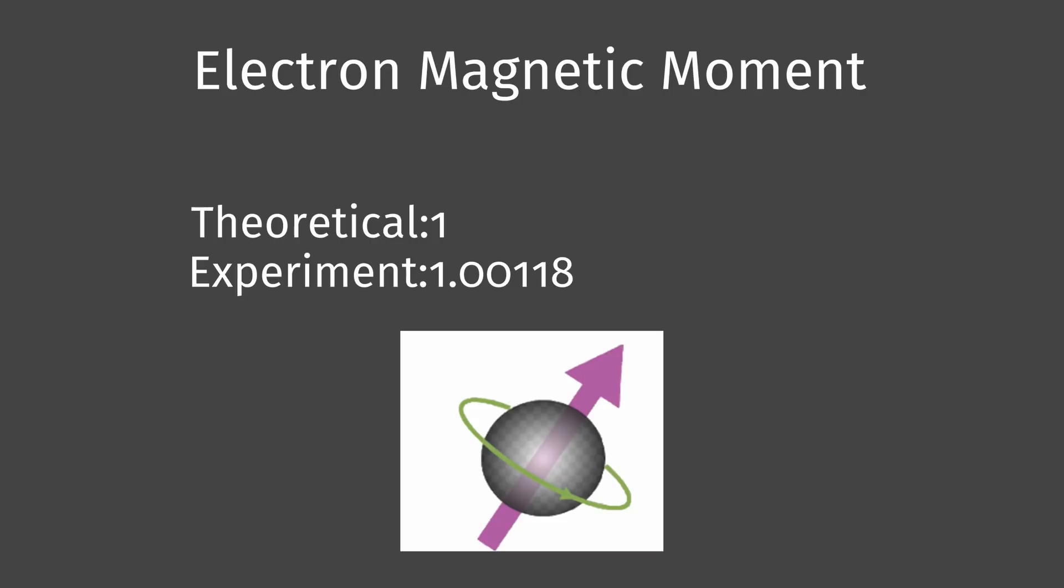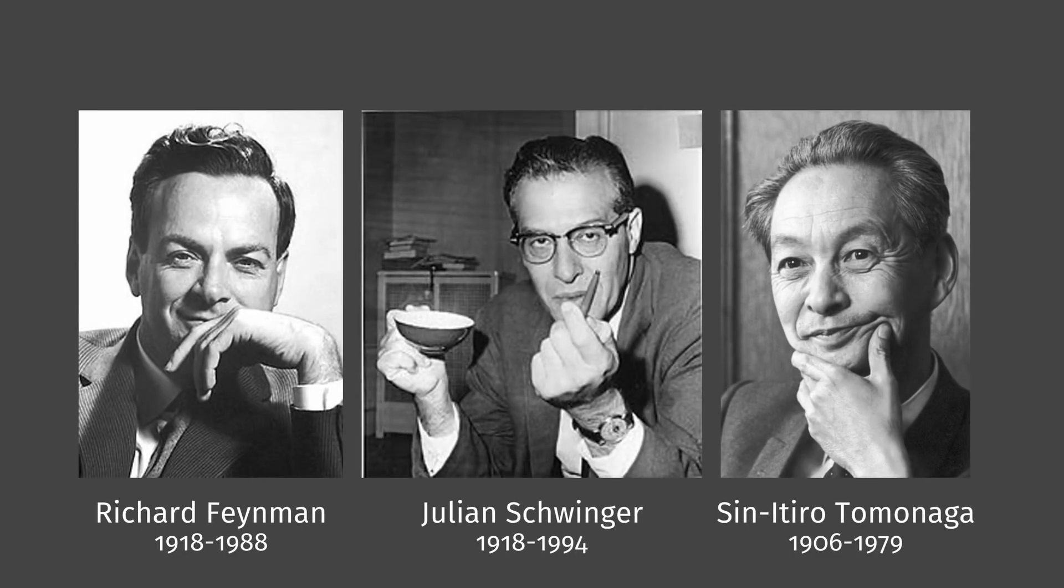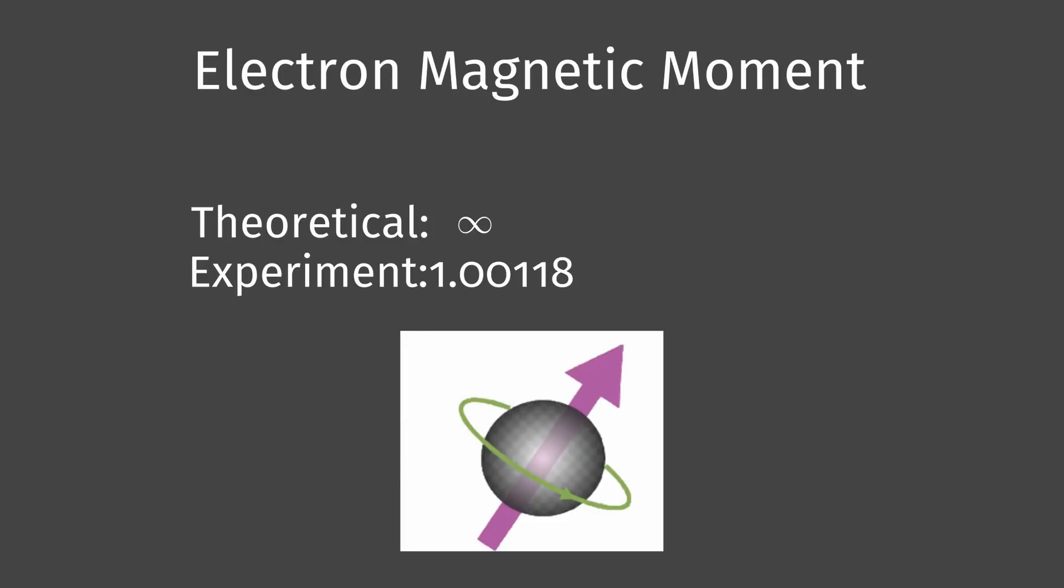Yet as we go and calculate, we get infinity, which is of course wrong. In the same year, Feynman, Schwinger, and Tomonaga tackled this problem, and they got a value near 1.00116, which tells us our theory might not be so wrong. This is the theory of quantum electrodynamics.